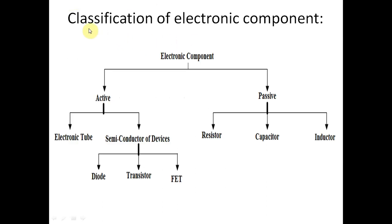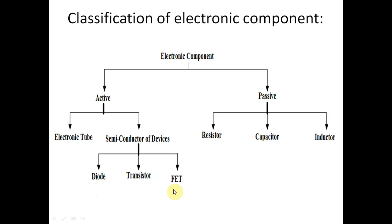Electronic components are classified into two types: active components and passive components. Active components are further classified into two types: electronic tubes and semiconductor devices. Semiconductor devices include the diode, transistors, and FET — FET stands for Field Effect Transistor.